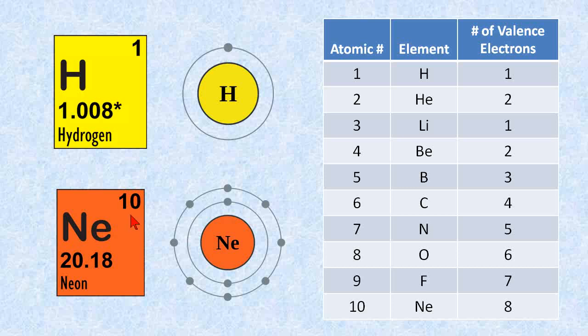The same with neon. The atomic number is 10, which means it has 10 protons and of course 10 electrons. And these electrons are arranged in two shells. The first shell has two electrons in it. The second shell has eight electrons. And each shell again is an energy level.